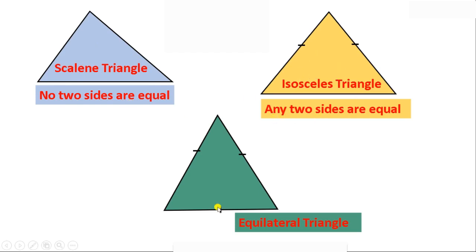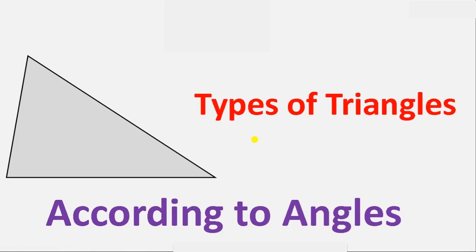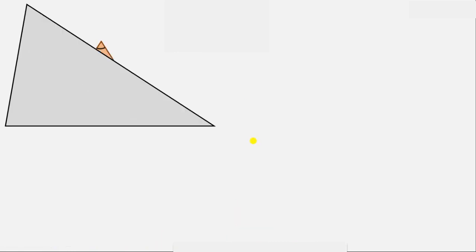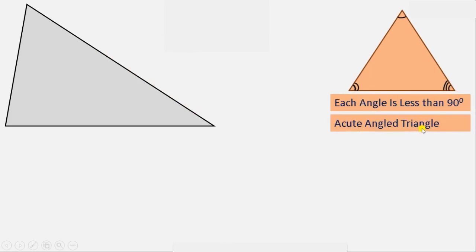Next, types of triangles according to angles. First, if each angle is an acute angle — that is, each angle is less than 90 degrees — it is an Acute angle triangle.